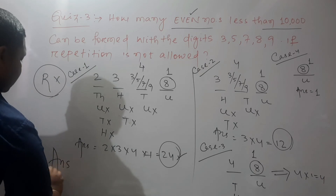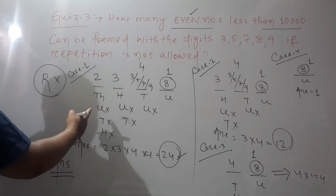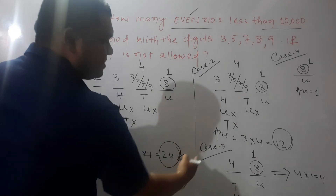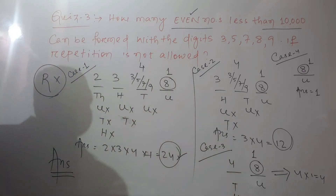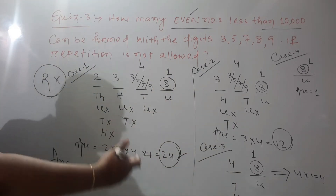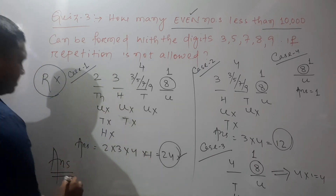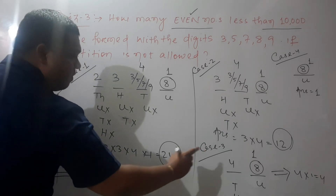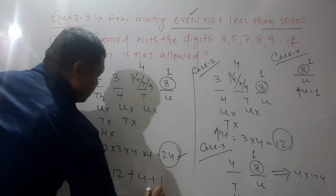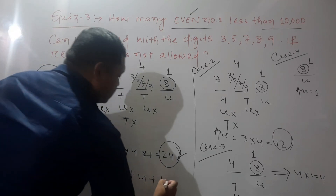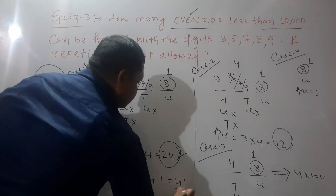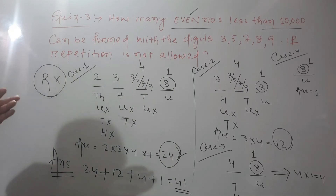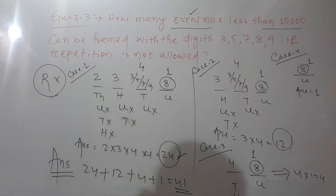The final answer is: Case 1 or Case 2 or Case 3 or Case 4 — 'or' means union, which means addition. So 24 + 12 + 4 + 1 = 41. Therefore, 41 even numbers less than 10,000 can be formed using the digits 3, 5, 7, 8, and 9.